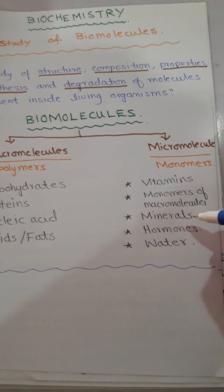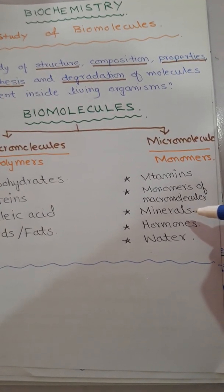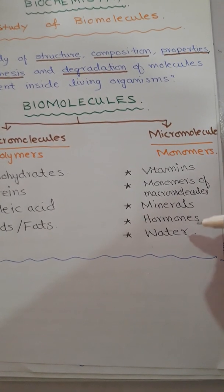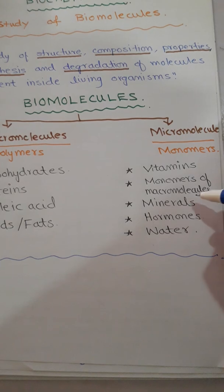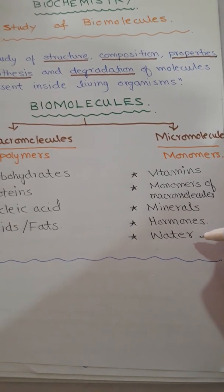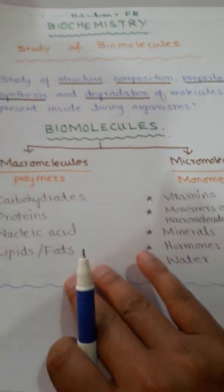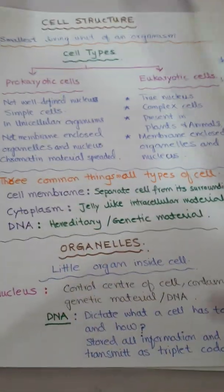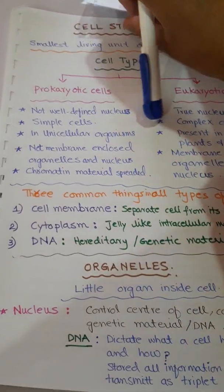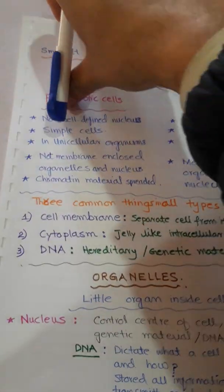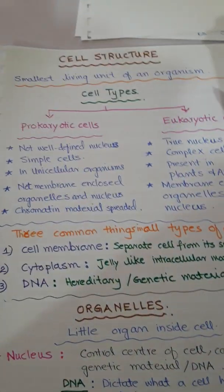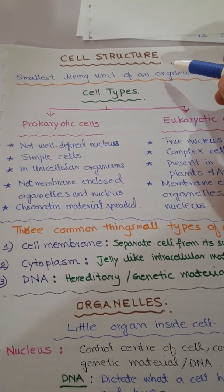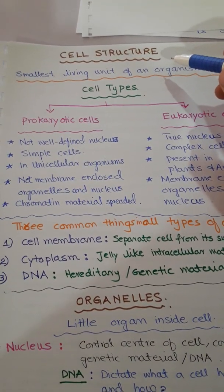Micromolecules also include minerals, hormones, and water. Minerals and water are inorganic in nature. Our next topic in biochemistry is cell structure. Before going into detail, we should know what a cell is and what components of the cell are important in biochemistry.